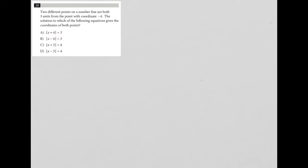So this question says two different points on a number line are both three units from the point with coordinate negative four. I think I'm going to treat this like a plug in picture question because the question describes something that can be drawn.